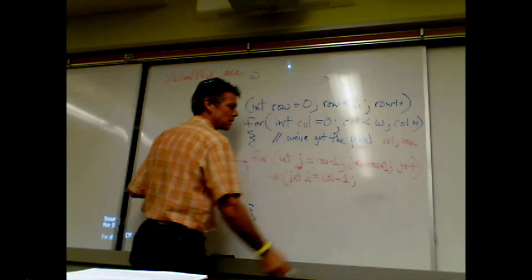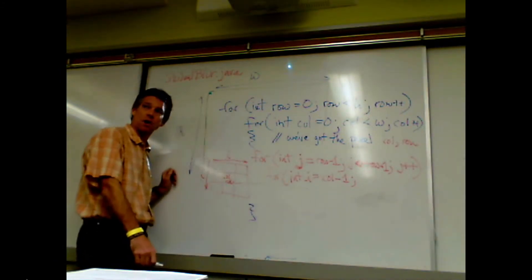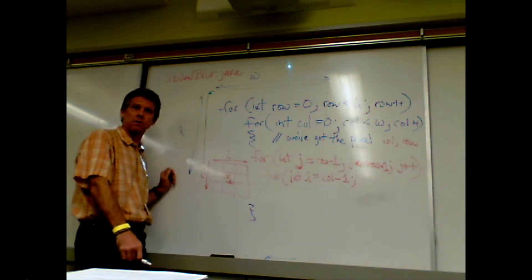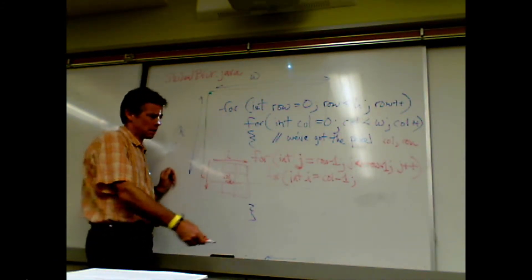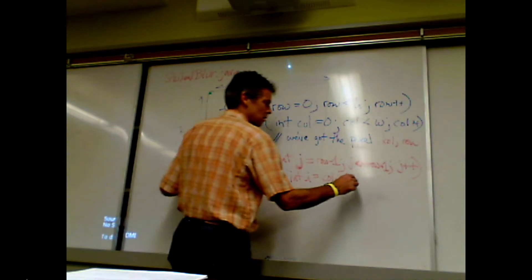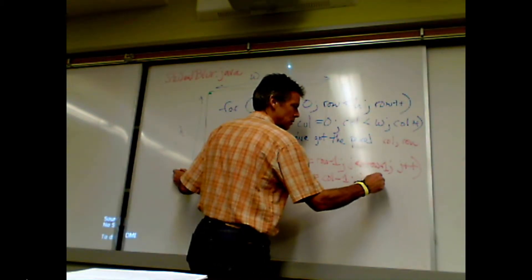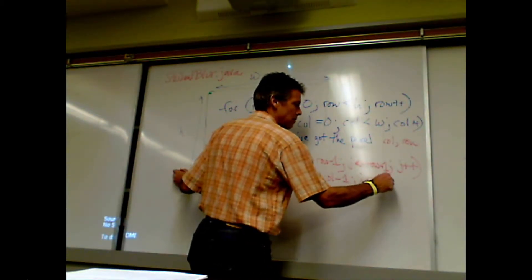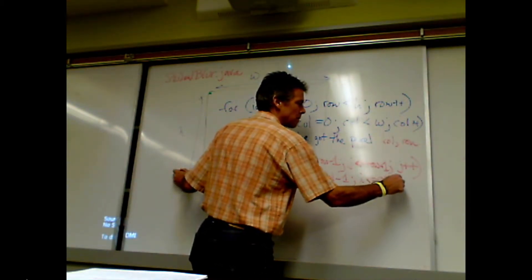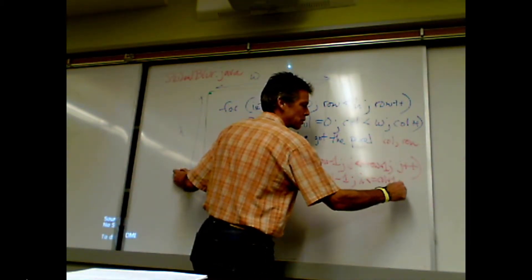The column loop range is discussed: from column minus one, going all the way over to column plus one. The loop will run while i is less than or equal to column plus one, incrementing each time.